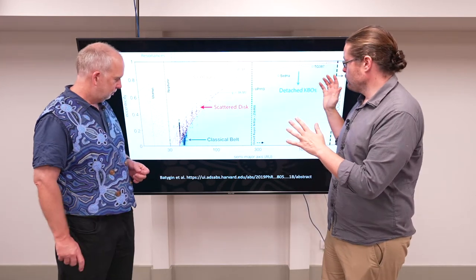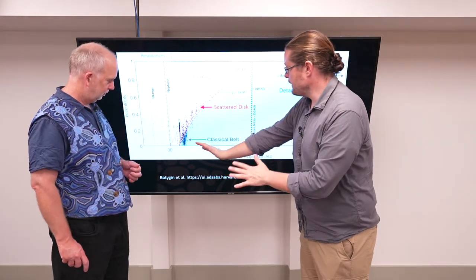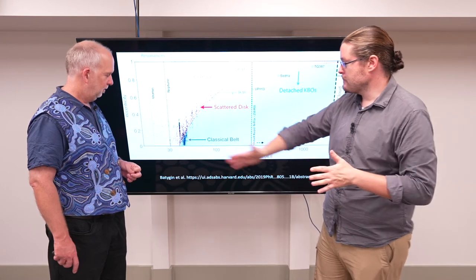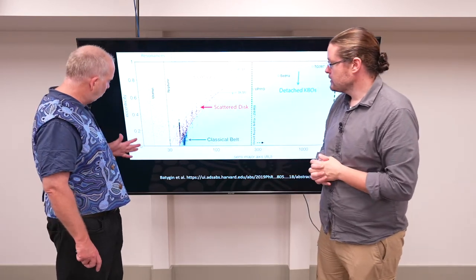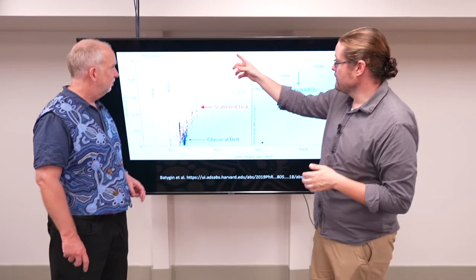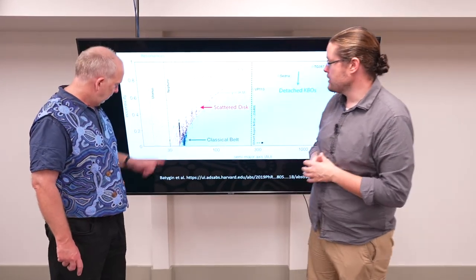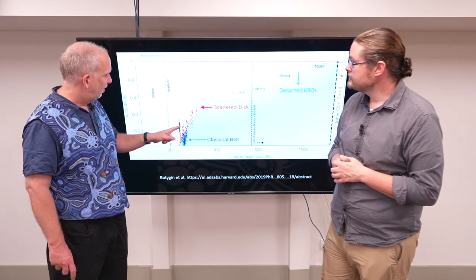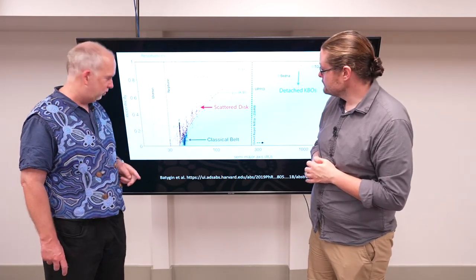So where are these things ending up as Uranus and Neptune have moved? Here's another plot - we're looking at the eccentricity versus the semi-major axis. We have the resonances as we were just talking about on the top. You see the three to two resonances are very crowded and some of the other resonances are quite crowded.